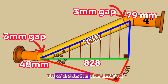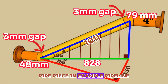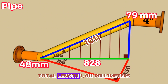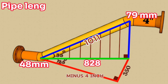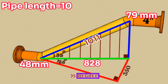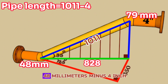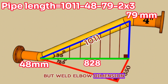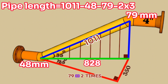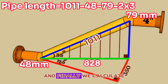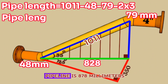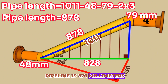Now we can start to calculate the length of the yellow pipe piece in the example pipeline. Pipe length equals total length 1011 millimeters, minus the 4-inch 35-degree butt-weld elbow dimension of 48 millimeters, minus the 4-inch 55-degree butt-weld elbow dimension of 79 millimeters, minus 2 times the welding gap of 3 millimeters. We calculated and found the length of the yellow pipe piece on this 4-inch pipeline is 878 millimeters.